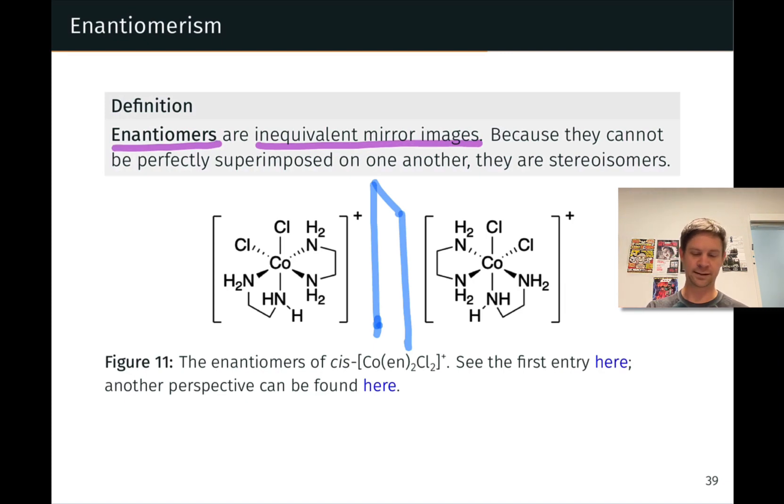Likewise, if I were to reflect this chloride ligand through the mirror, I'd get this chloride ligand. And this chloride ligand pointed towards the back reflected through this mirror, which is perpendicular to the screen, would lead to this chloride ligand. And you can look in detail at all of the ligands and the cobalt center to verify that these molecules are mirror images of each other.